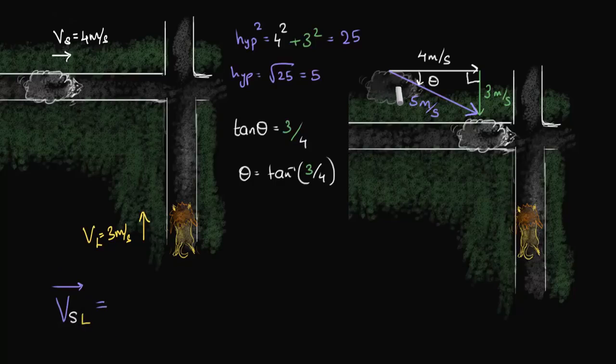This vector is this vector which we have drawn, 5 meters per second. So, how did we get this, is the question. Well, we added this vector and this vector, right? This is a triangle law, vector addition.